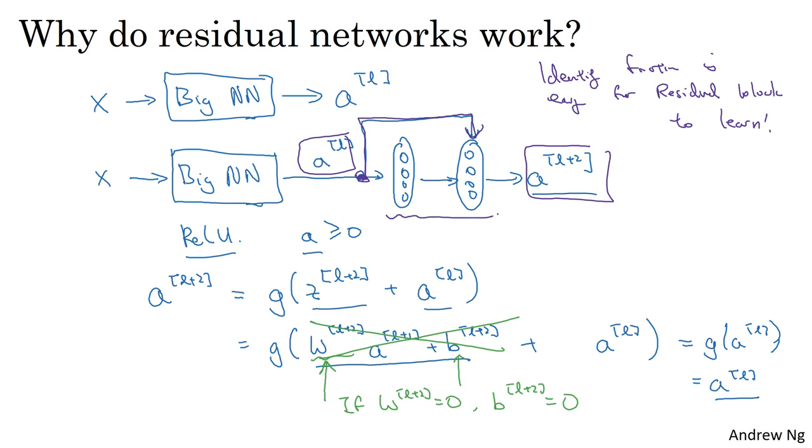And what that means is that adding these two layers to the neural network, it doesn't really hurt your neural network's ability to do as well as this simpler network without these two extra layers. Because it's quite easy for it to learn the identity function, to just copy AL to AL plus two despite the addition of these two layers. And this is why adding two extra layers, adding this residual block, somewhere in the middle or to the end of this big neural network, it doesn't hurt performance.